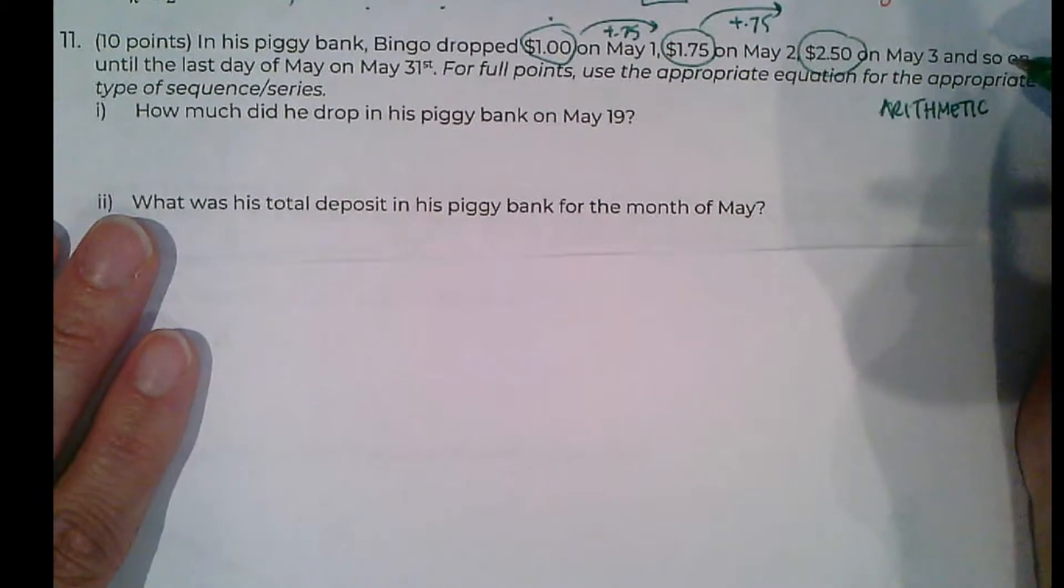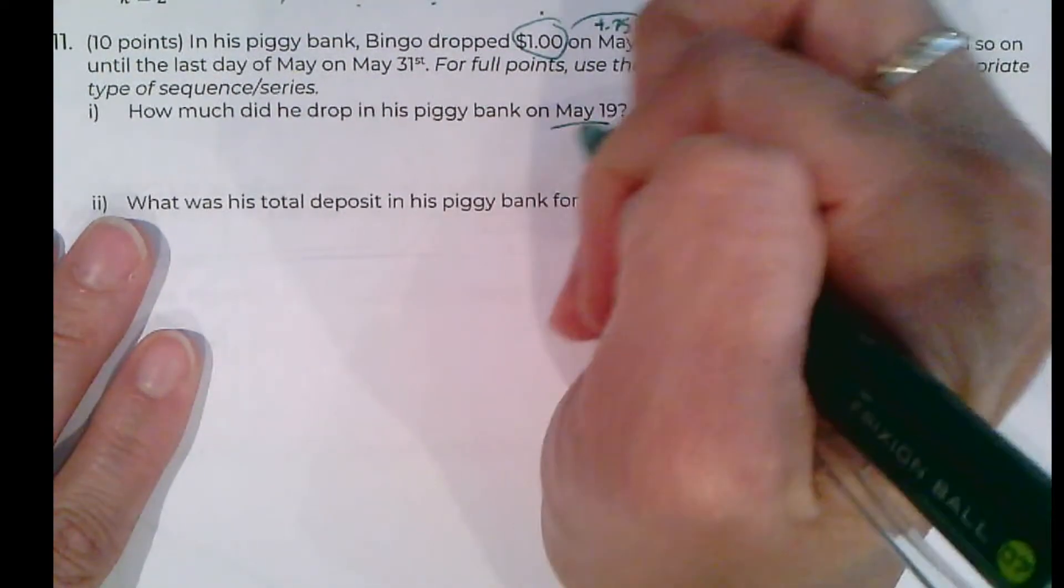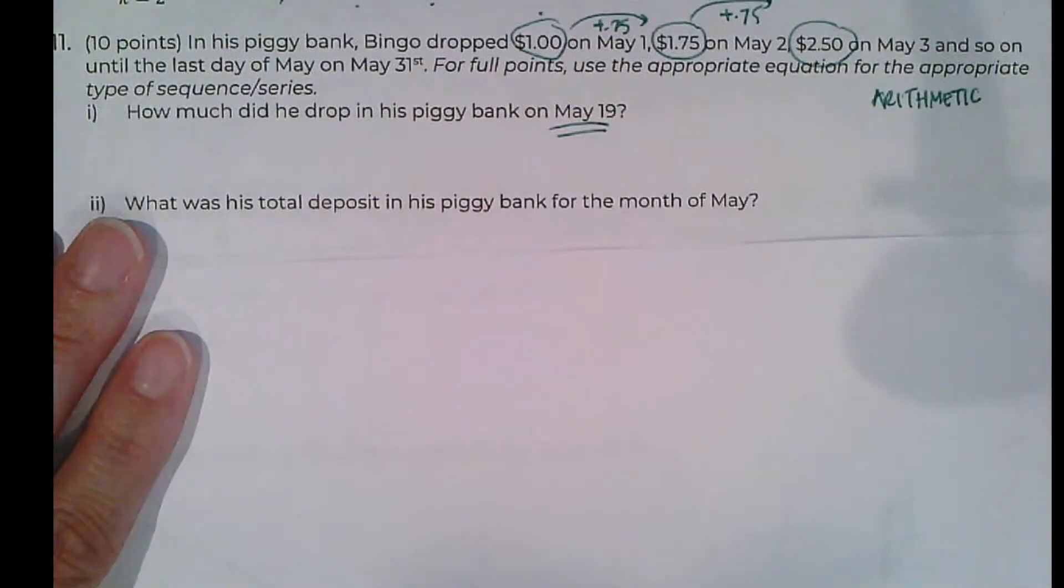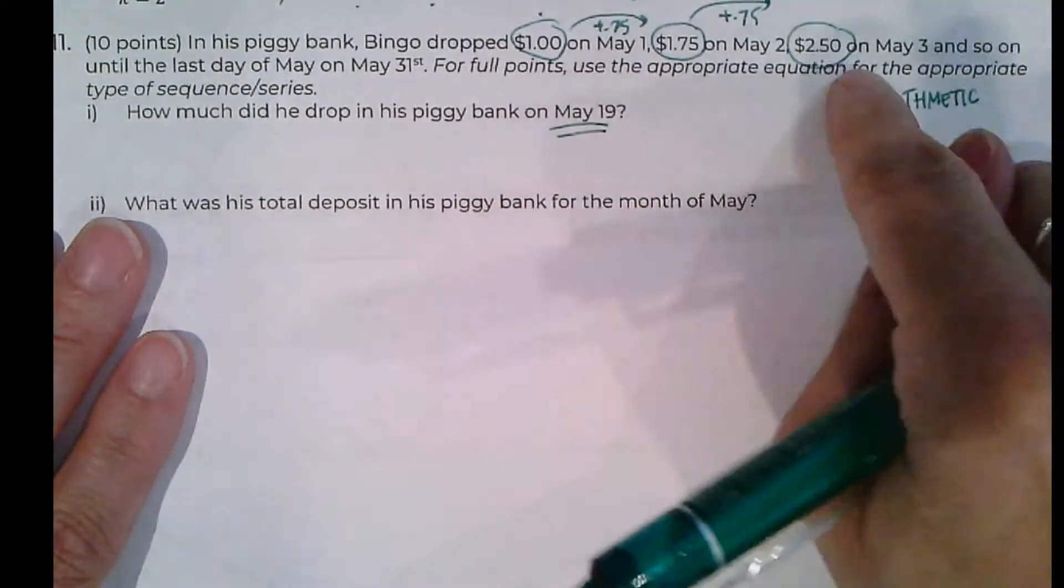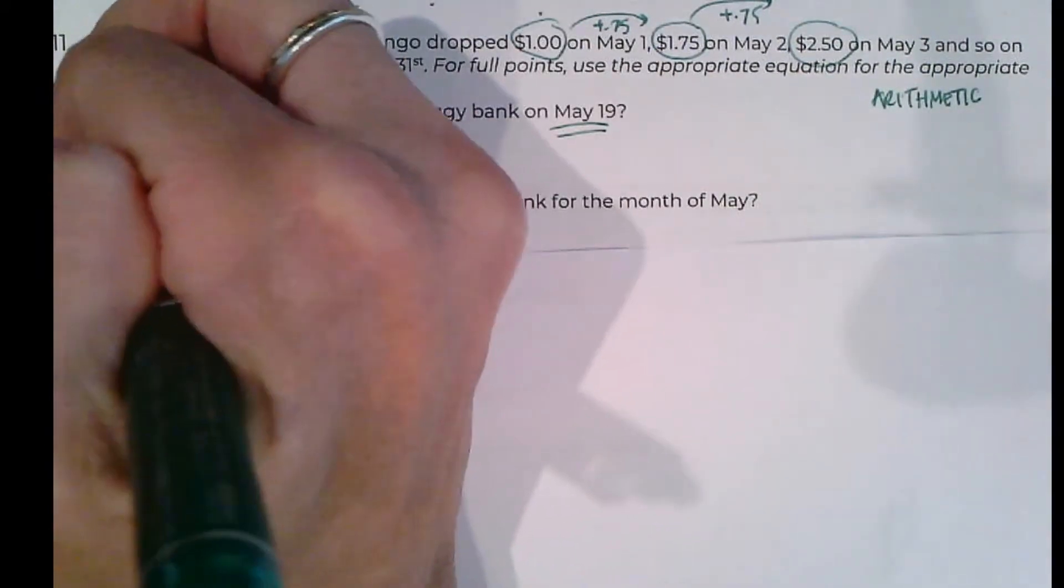And then we read on to figure out if we want the A_N or the S_N here. For full points, use the appropriate equation. How much did he drop in on May 19th? So in that case, I'm not looking at how much total is in his piggy bank, I'm not going to add these together. I just want to know how much went on the 19th. So I'm looking for A_N.